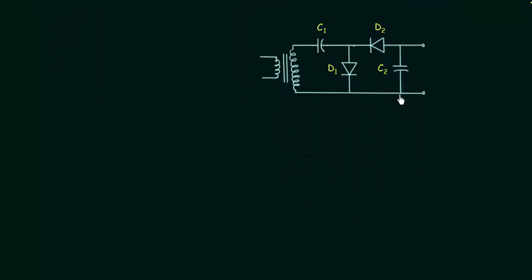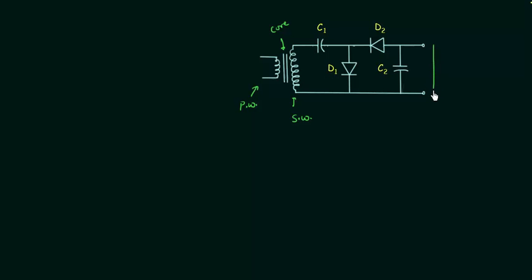This is the circuit for the half wave voltage doubler. This is the primary winding of the transformer and this winding is the secondary winding of the transformer. The two parallel lines are the core of the transformer. In this circuit we are using two diodes D1 and D2 and two capacitors C1 and C2. The output voltage Vout is measured across capacitor C2.